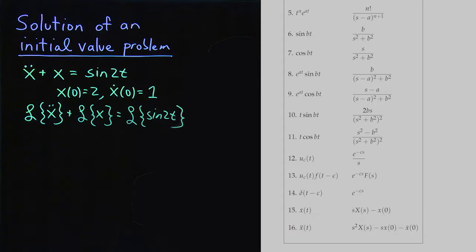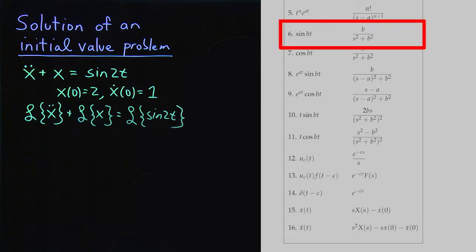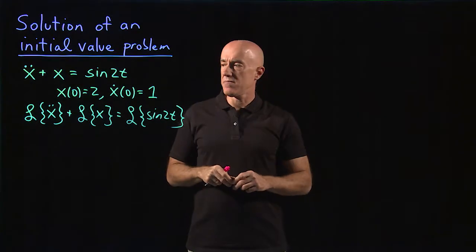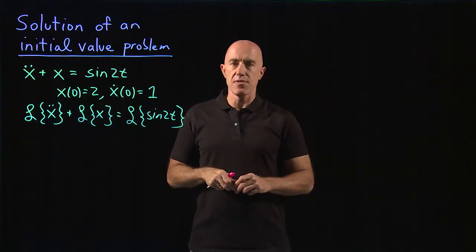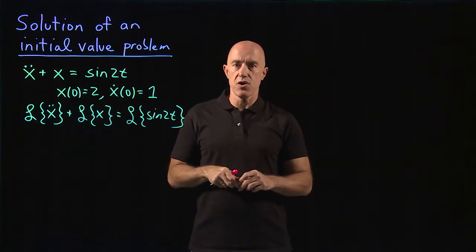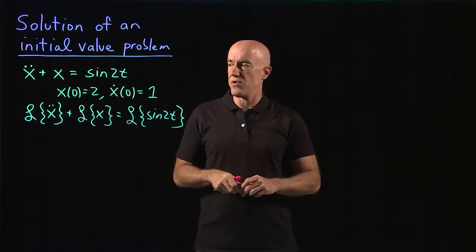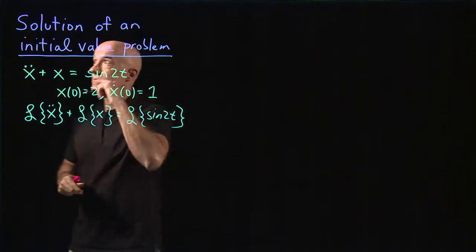And then to Laplace transform sine 2t, we use line 6, where b is equal to 2, so it will be 2 over s squared plus 2 squared, which is 4. Making use of the table then, we can go ahead and do the transform.